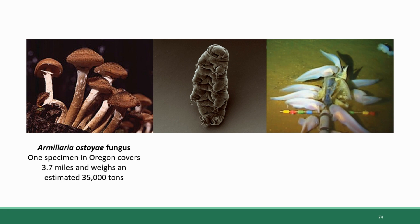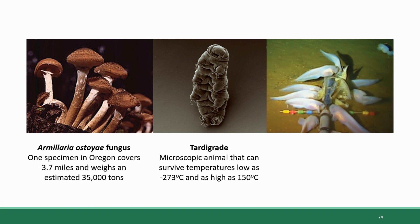Another organism that represents the wide diversity of life is the tardigrade, also known as the water bear. These are microscopic animals — this one's pictured in the middle — and they have an incredible hardiness to extreme conditions that has been well documented. They can survive in temperatures as low as negative 273 degrees Celsius and as high as 150 degrees Celsius.